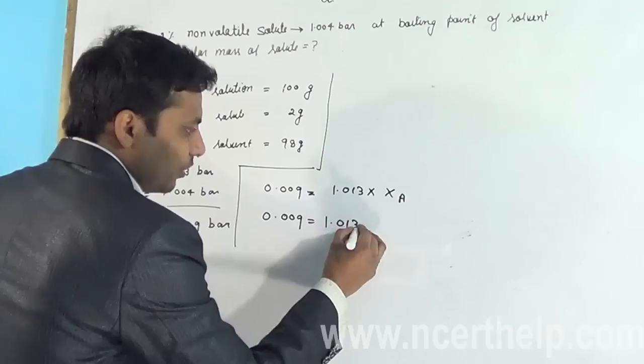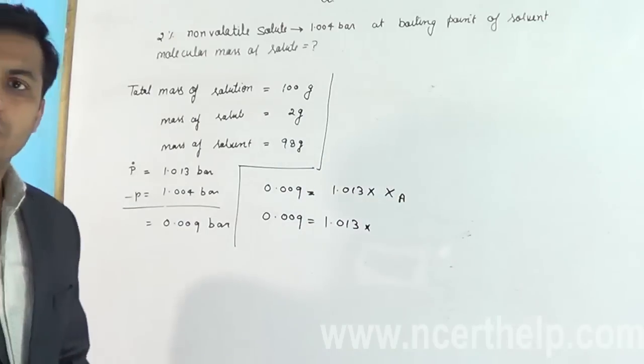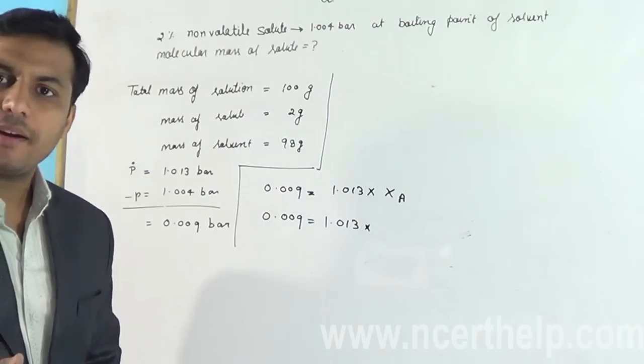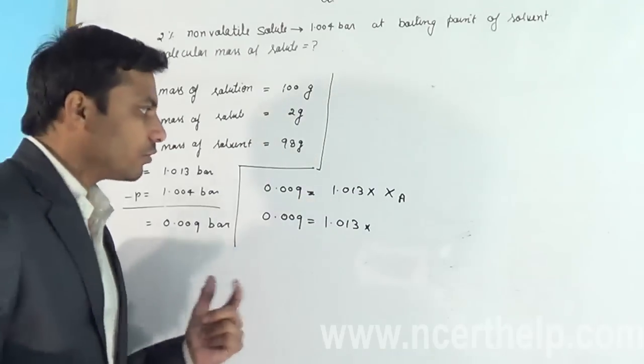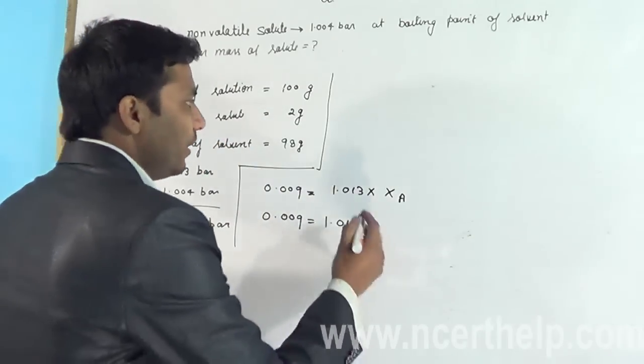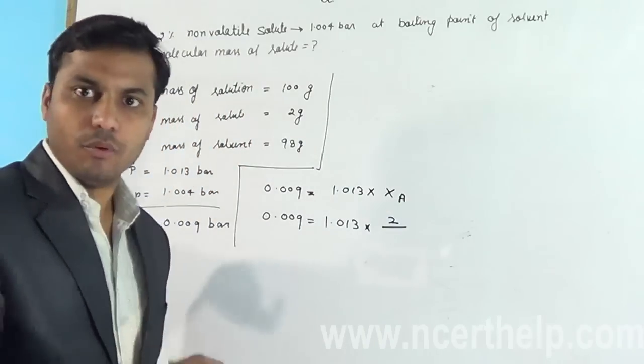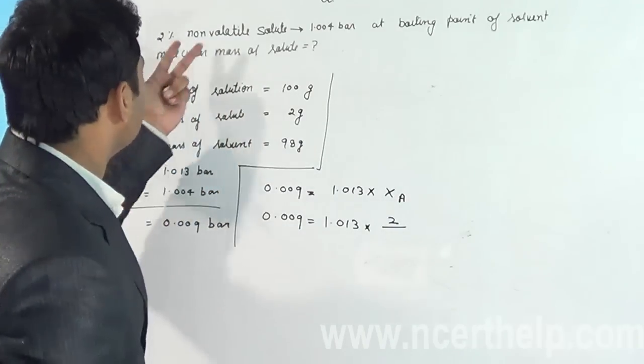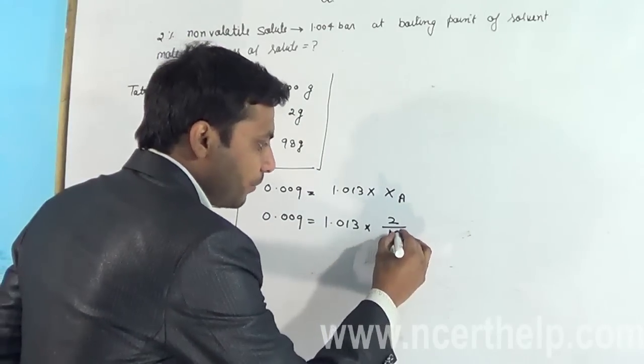1.013 into molar fraction of solute. Molar fraction is always equal to number of moles of solute divided by total number of moles of solution. So we have to find number of moles of solute here. You can see mass of solute is 2 grams divided by the molar mass, but I don't know what is the molar mass of the non-volatile solute we have to find, so I am plugging M in place of molecular mass.